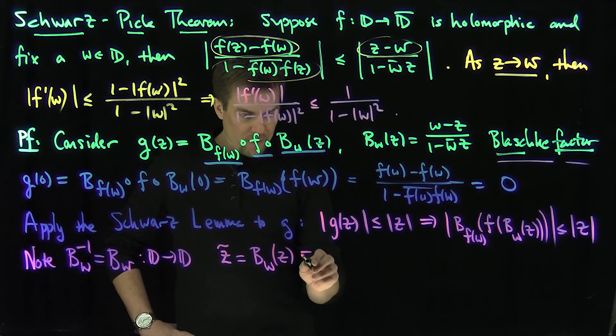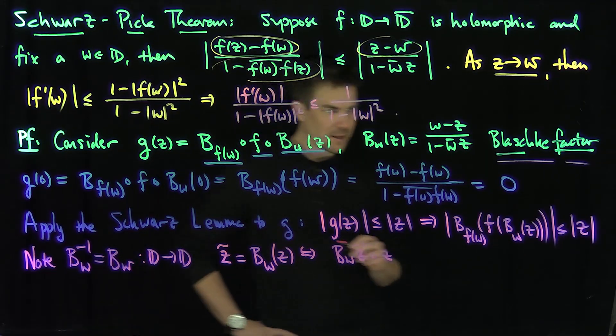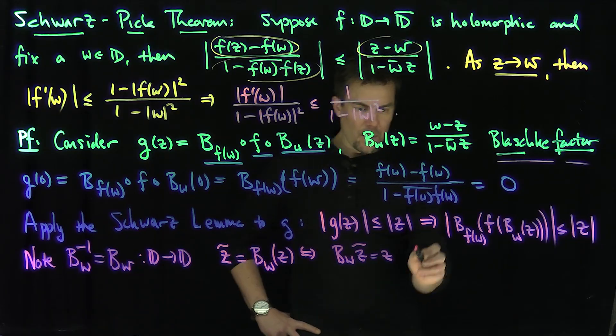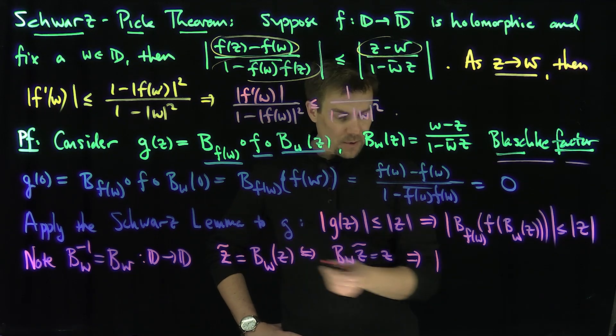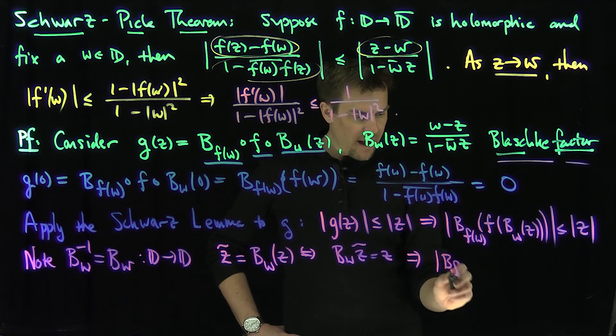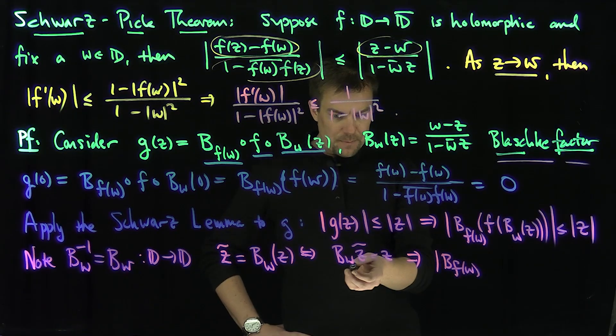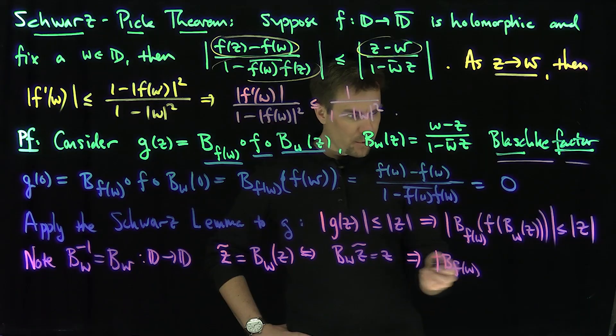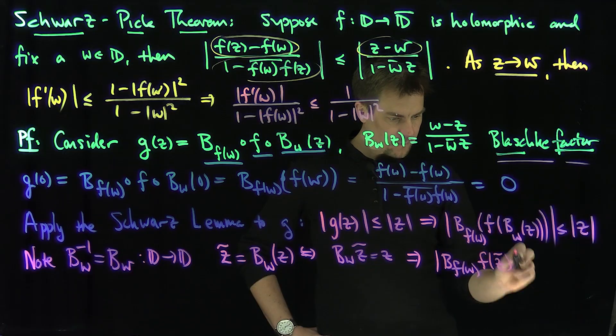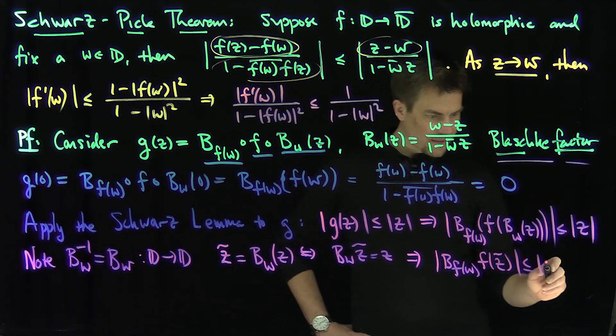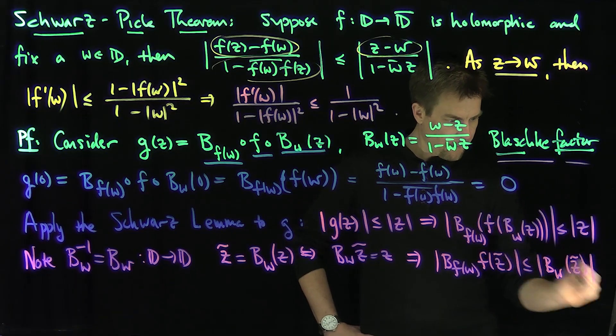This is equivalent to saying that B_w(z tilde) is equal to z. So what will this tell me? With this choice of z tilde—and z tilde is a one-to-one mapping of the disk—this is B_{f(w)} of f of z tilde is less than or equal to B_w of z tilde.